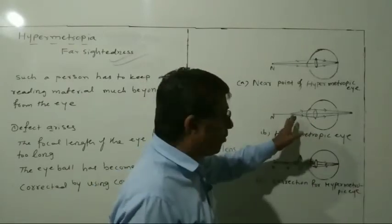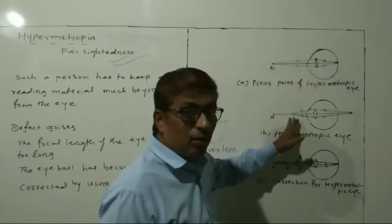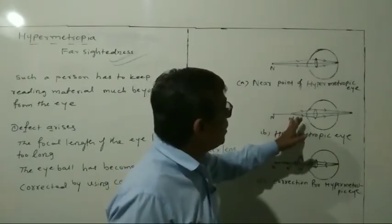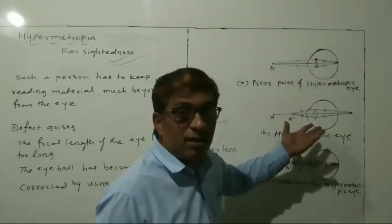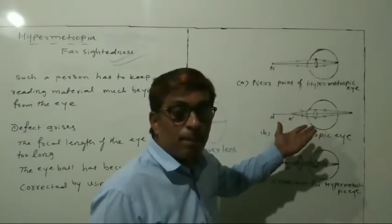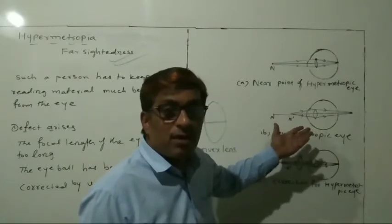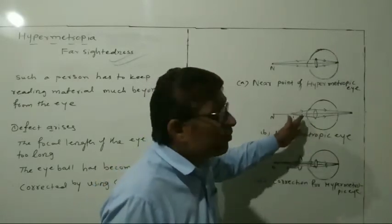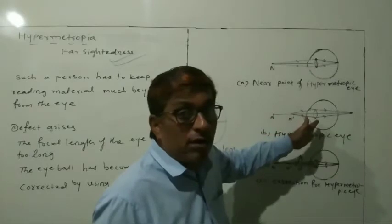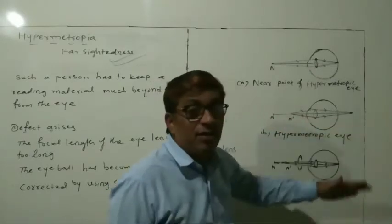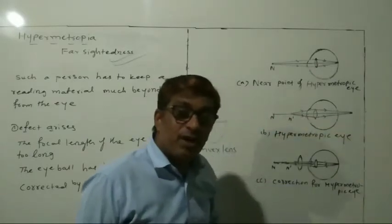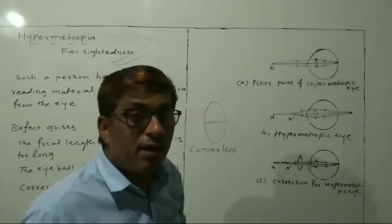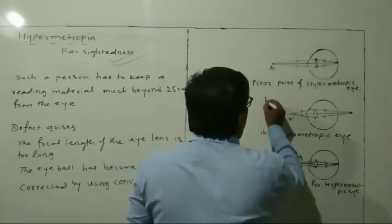If the object is placed at the normal near point, the person cannot see it. The image will fall behind the retina. That is what farsightedness means.